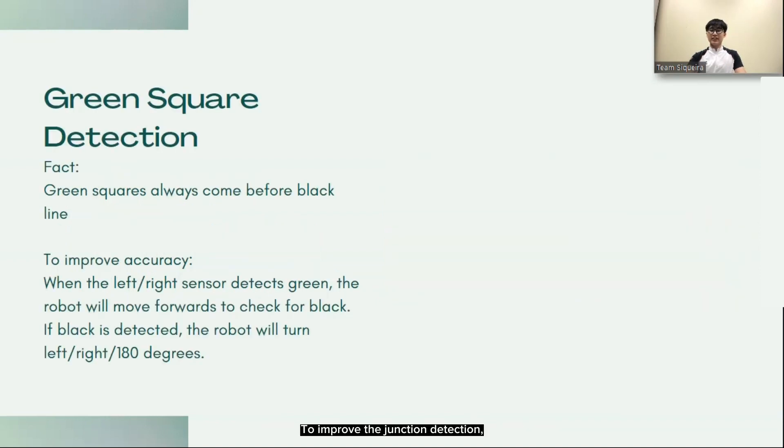To improve the junction detection, the robot, after detecting, will move a little forward to double confirm the configuration of the junction and move forward to check for the black line before proceeding to the corresponding action such as turning left, right, or back around.